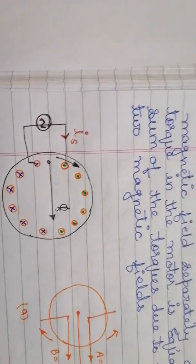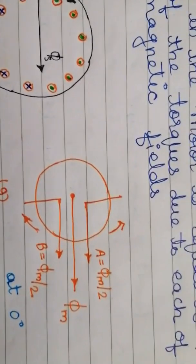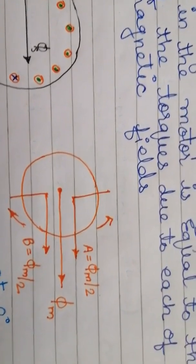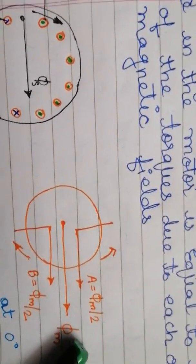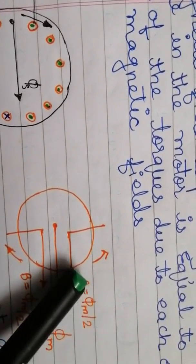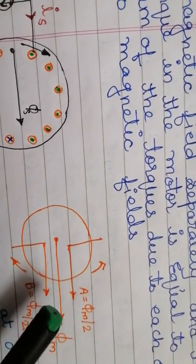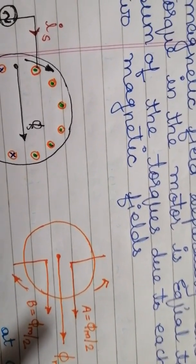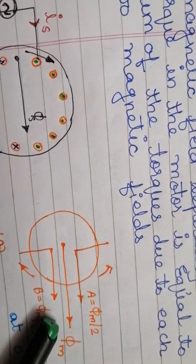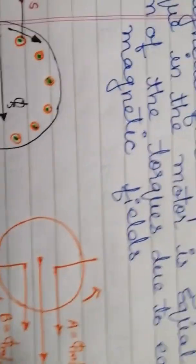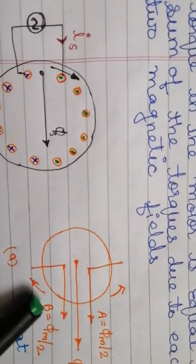Let the alternating flux have a maximum value of φm. This maximum flux is resolved into two components, A and B. Each component flux A and B will be equal to φm/2, and both are revolving in anti-clockwise and clockwise directions respectively — A revolving anti-clockwise and B revolving clockwise.